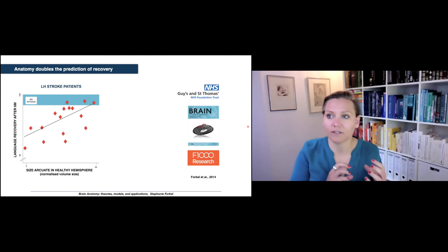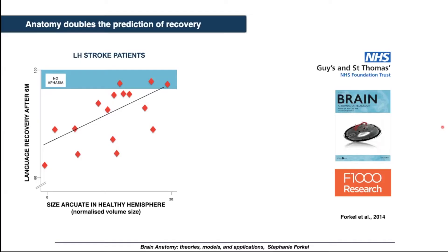The first study to actually show the impact of connectional variability and clinical measures was this study that we did in 2014, where we basically looked at stroke patients with aphasia, so the inability to understand or articulate language. We were able to demonstrate that taking anatomical variability into account doubles the accuracy of predicting recovery. What you see on that graph on the left is the language recovery six months after symptom onset plotted against the size of the arcuate in the healthy right hemisphere.